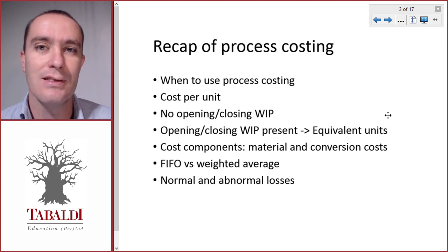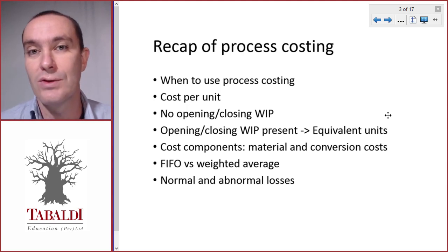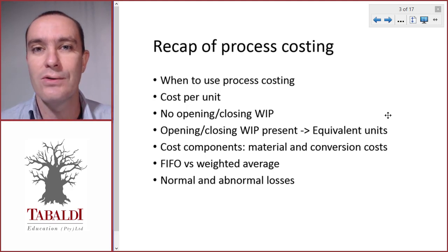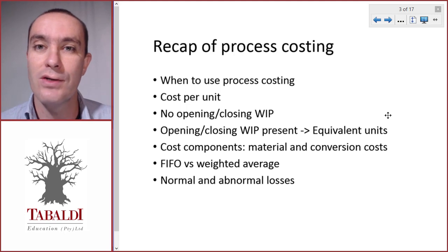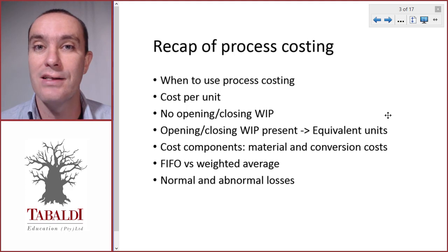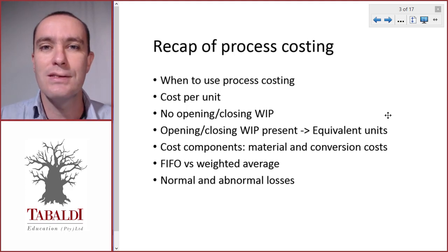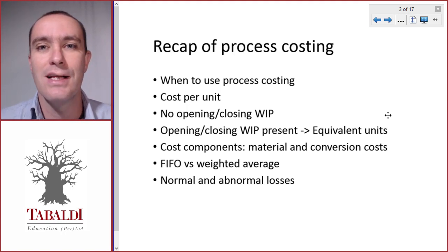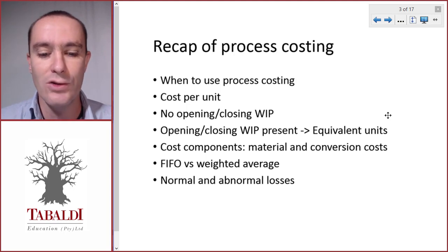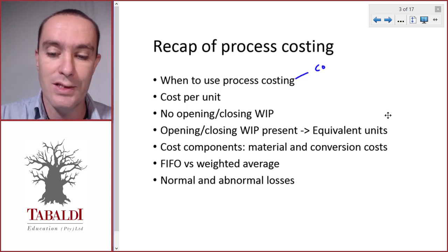When we cost a product and assign costs to a product, we could use job costing if it's a unique product or service, so we can assign the cost directly using job costing. But in some cases that's going to be too time-consuming, and because it's repetitive we can use process costing — that is when it's a continuous process.